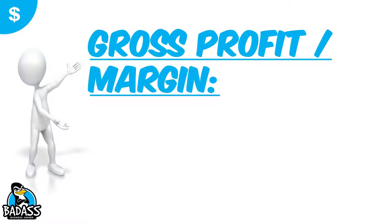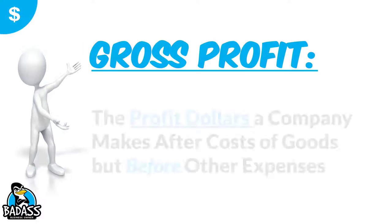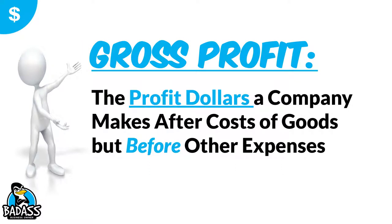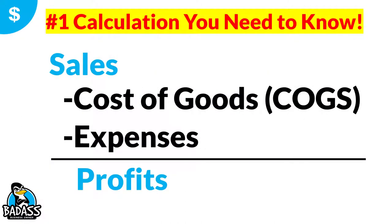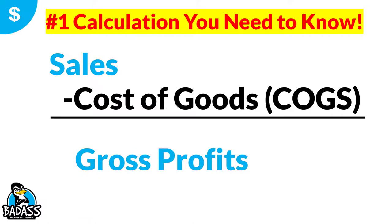So when we're looking at gross profit and gross margin, we focus on those first two areas, which is sales minus cost of goods. That's where we're gonna be focusing our attention for today's lesson. Gross profit is the profit dollars a company makes after cost of goods but before the other expenses. We're gonna drop the bottom two — we're not gonna look at the expenses and we're not gonna look at the profit. All we're focusing on is your sales minus your cost of goods, which gives us our gross profit.